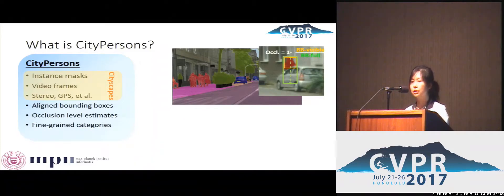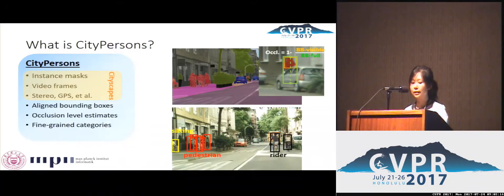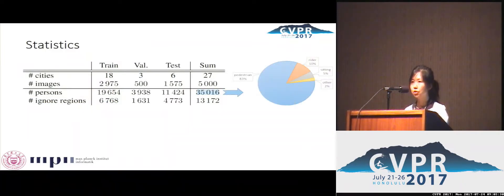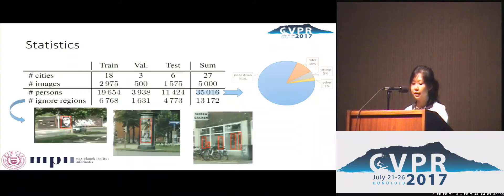The association of full boxes and visible boxes allows us to estimate occlusions. We also group all humans into pedestrians, riders, seating persons, and others based on their postures. We have annotated 5,000 images obtaining around 35,000 person boxes, of which 83% are pedestrians and 10% are riders. We also mark a lot of fake humans as ignored regions, including drawings on the wall, humans on posters, and human-like figures.